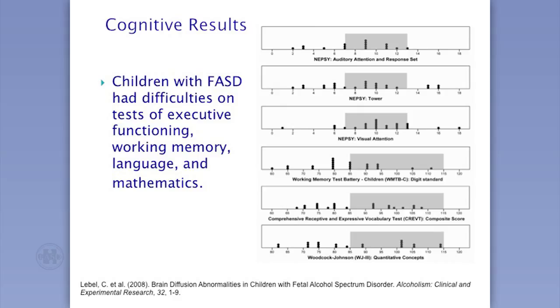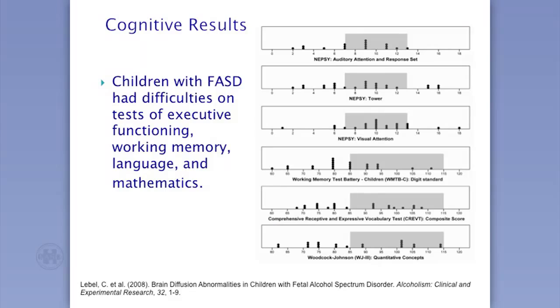Working memory was really significantly impacted — only a few kids scored in the average range. There's always a spread; kids aren't going to cluster at one point, which is why FASD is so variable. What may work for one child may not work for another; what works one day may not work the next. We see a lot of variability in performance, and showing individual data points rather than just a mean bar graph illustrates that clearly. This also includes measures of language and math.